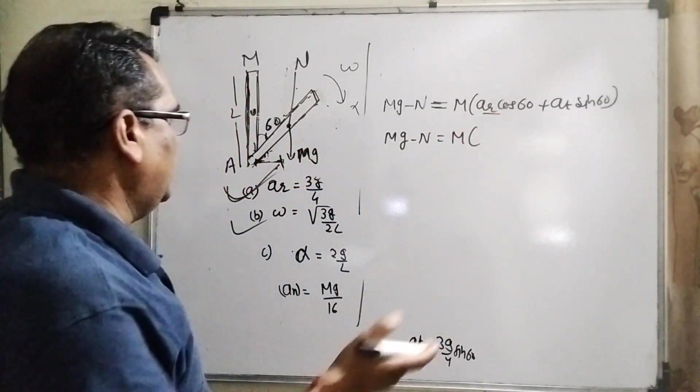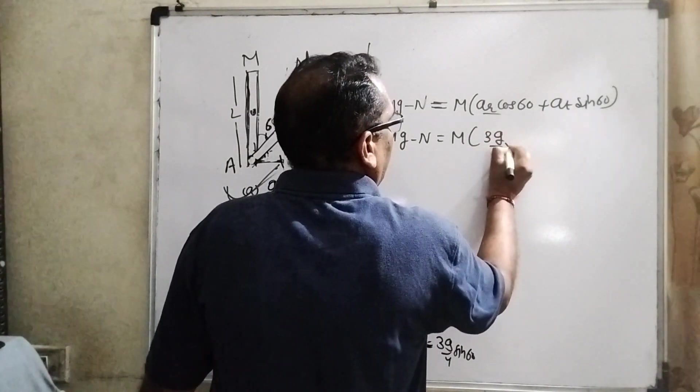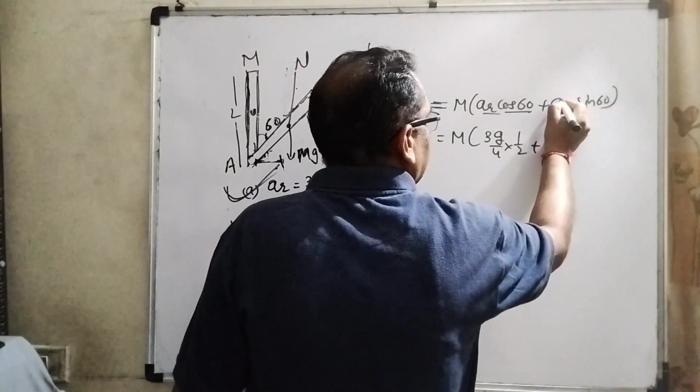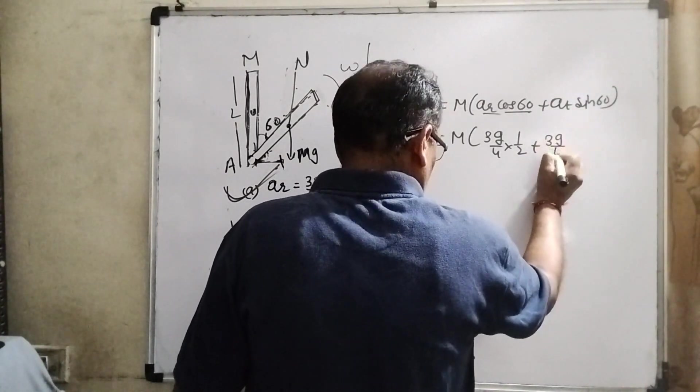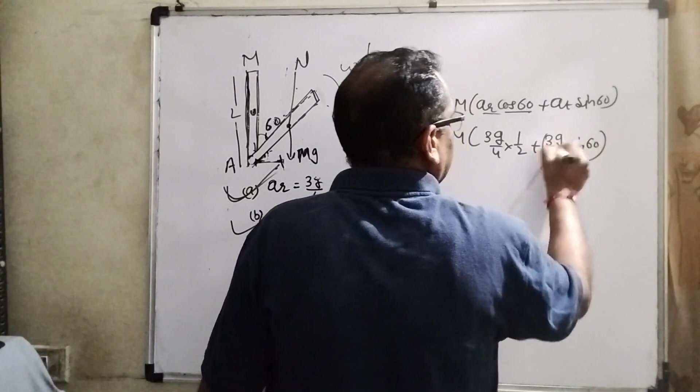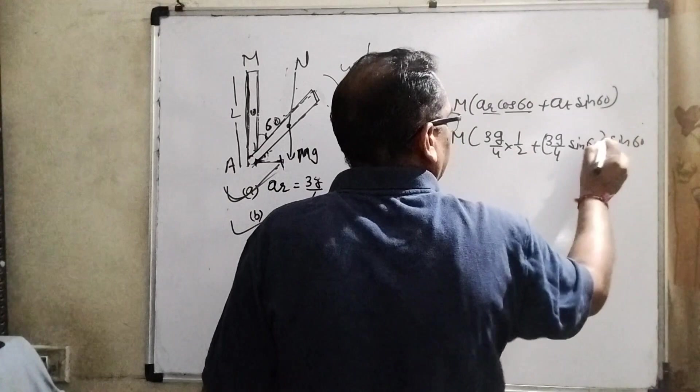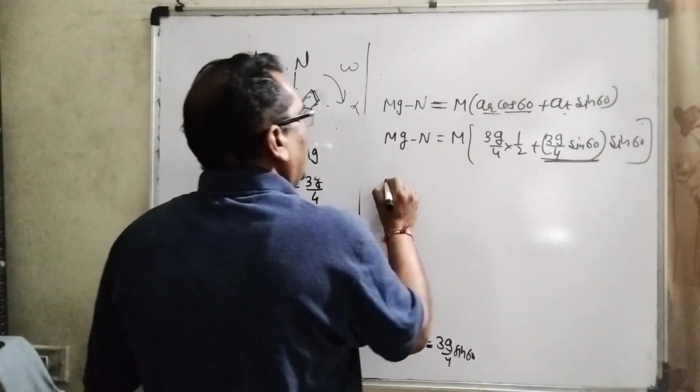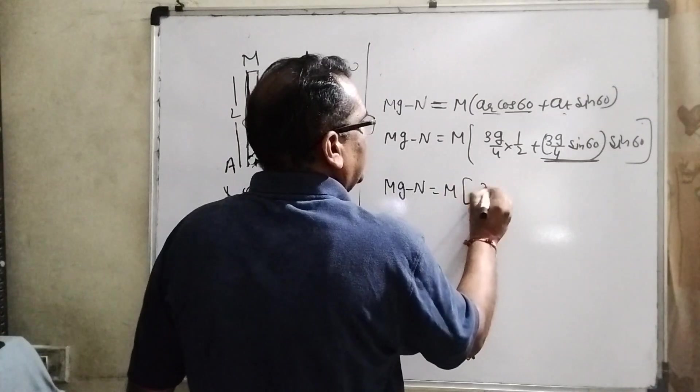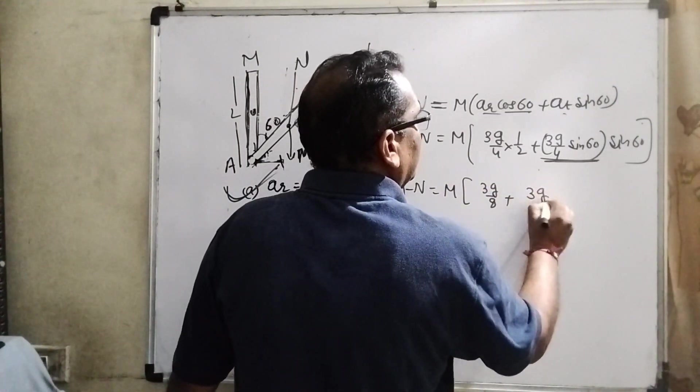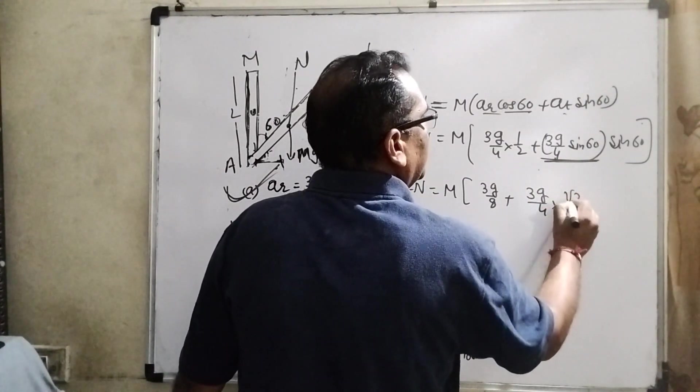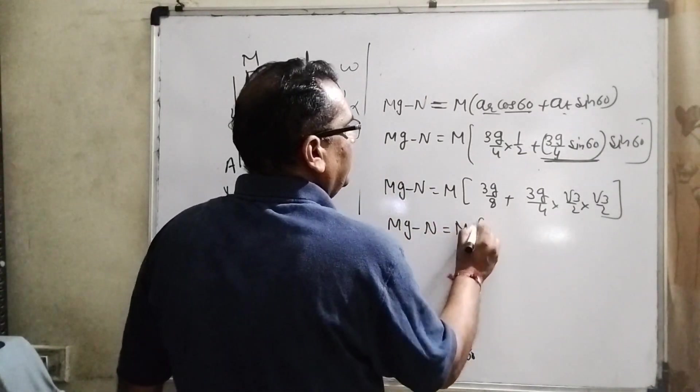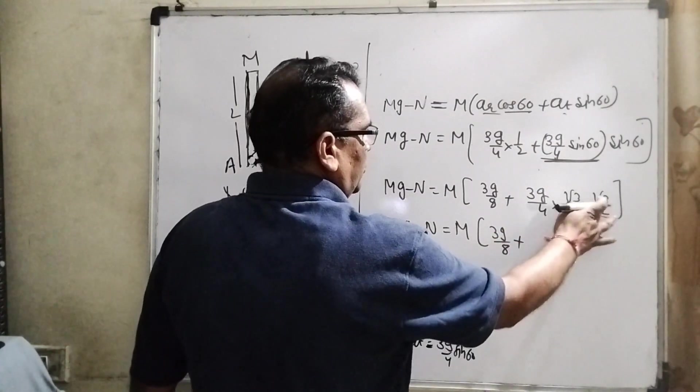Then resultant is M g minus N equal to M into radial acceleration, cos component and tangential sine component. Now, M g minus N equal to M. What is the value of AR? We have already found out 3g by 4. And what is the value of cos 60? 1 by 2. What is the value of AT? AT means acceleration tangential: 3g by 4 sin 60. This is the AT and sin 60 again. Now M g minus N equal to M, 3g by 8, 3g by 4 sin 60 is root 3 by 2, again sin 60 is root 3 by 2.